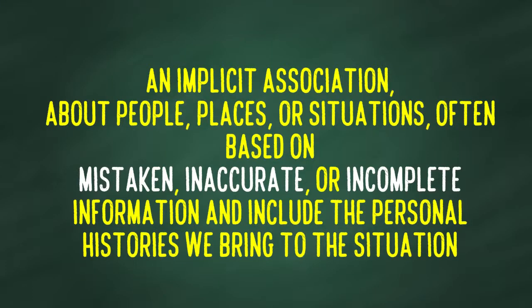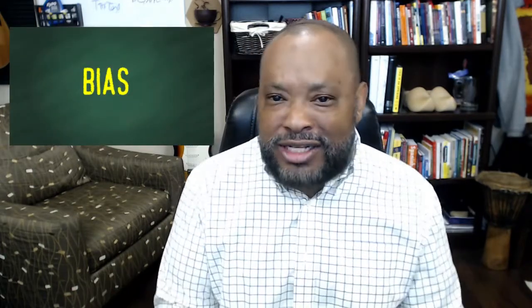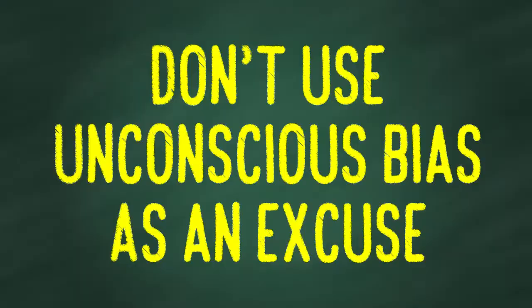Implicit bias is an association about people, places, or situations often based on mistaken, inaccurate, or incomplete information, and it includes the personal histories we bring into any situation. When I say implicit bias, I mean that we all have an understanding of the biases that we have. So just to say that we have unconscious bias — that we are sleeping — I say you need to wake up to your bias, because you understand the history and the bias that you bring into a situation. I actually believe the term unconscious bias is pretty much a cop-out when we think about the workplace and how we deal with people on a daily basis. At some point, we become aware of the bias that we have.